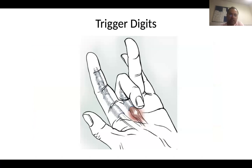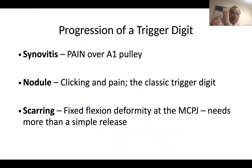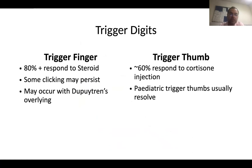Trigger digits — something a little bit more straightforward. You'll see this in both adults and in children. It often presents with pain over the A1 pulley, which is just over the MCP joint heads. Patients complain of clicking and pain, and sometimes the digit gets stuck. Majority respond to steroids — I recently did a steroid injection that lasted about nine months. It can have an association with diabetes, particularly if multiple digits are triggering. In children it usually resolves; if it doesn't by the age of two, then consider surgical release. In children, if it's particularly affecting the thumb, you'll feel a little nodule around the base of the thumb.